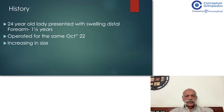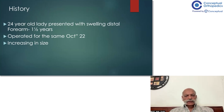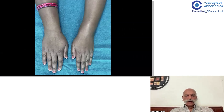To recapitulate, this patient is a 24-year-old lady who presented with swelling of the distal forearm, with a duration of one and a half years. She was operated elsewhere for the same problem in October 2022, but later on she started noticing that the size of the swelling had again started increasing. When she came to us about a year ago, this was the picture — you can see it is the left side, the left wrist area, where there is a swelling in comparison to the right normal side.